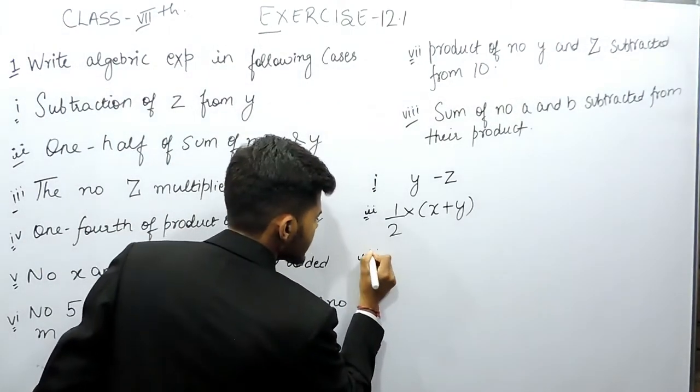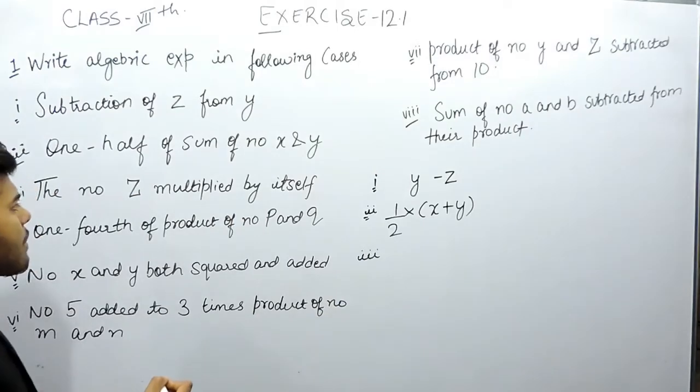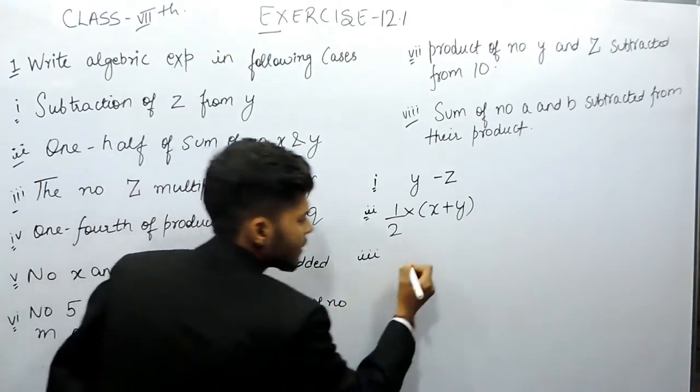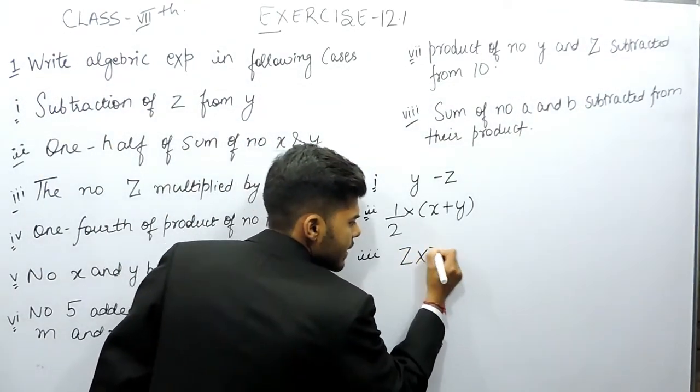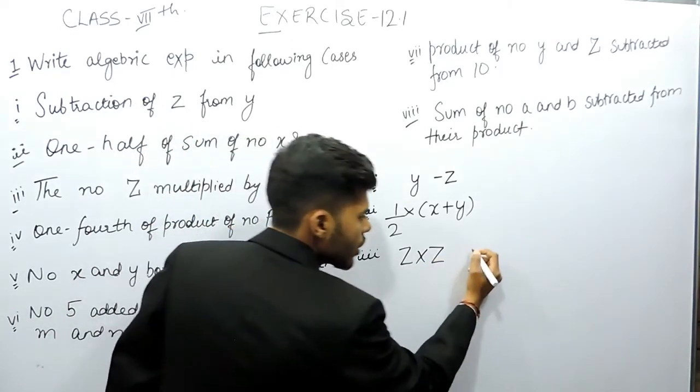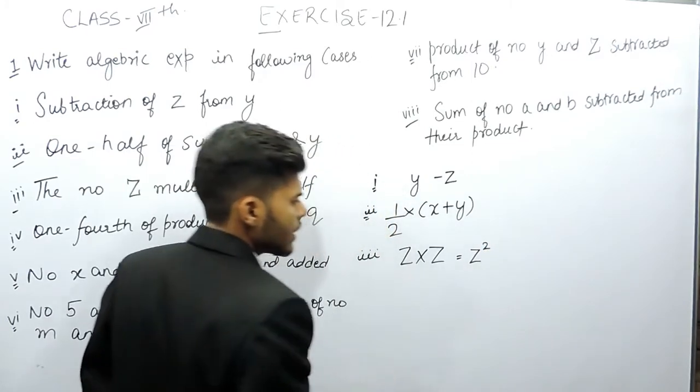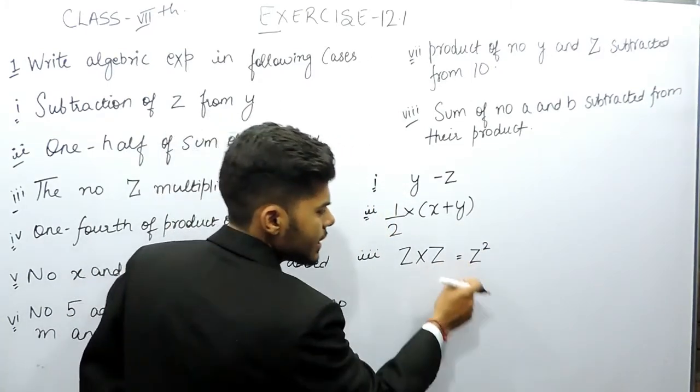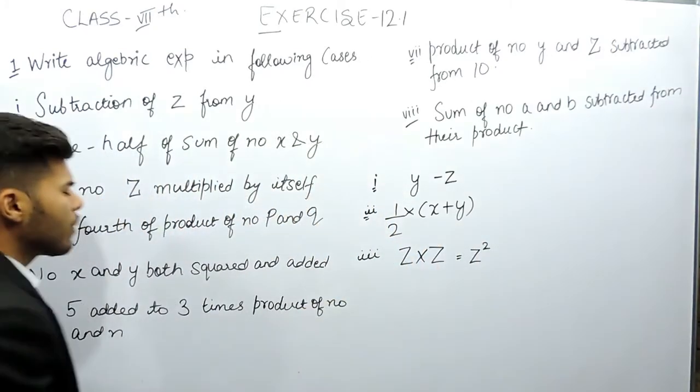Part 3 says the number z multiplied by z. That means z multiplied by z. So we can write this way or we can write it like z square. They mean one and the same things. This is in exponential form and this is in normal form.